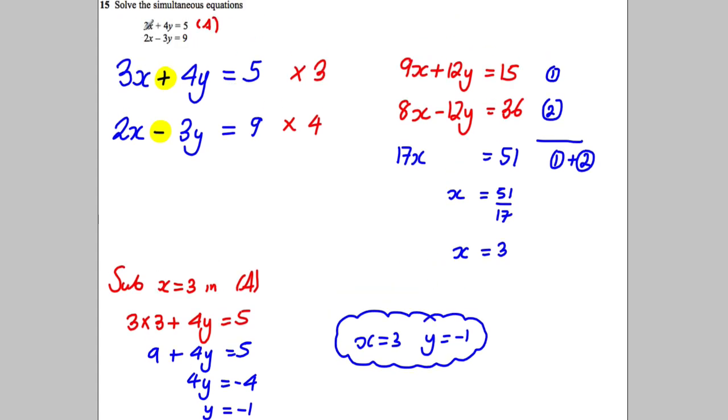Let's check it in each one. 3 × 3 is 9, 4 × -1 is -4, 9 - 4 is 5. It works for the first one. 2 × 3 is 6, and we've got subtract 3 × -1 which would be -3, and 6 - (-3) is indeed 9. So I know I've got the right answer there.